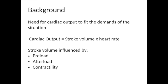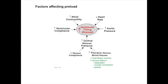The first bit of background information you need is to think about how the circulation operates overall, and in particular to appreciate that we need enough cardiac output to fit the demands of any given situation. Cardiac output itself is the product of stroke volume — how full the heart is per beat — multiplied by heart rate. There are a number of factors influencing stroke volume. These include the preload, the extent of filling of the heart before the beat, afterload, the resistance against which it contracts, and contractility, the overall pumping power of the heart.